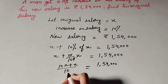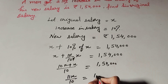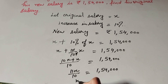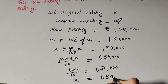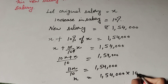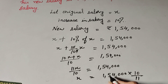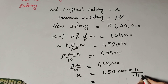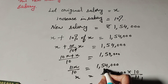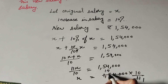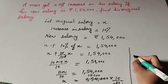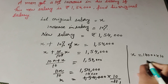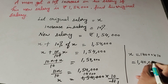So 10x plus x equals 11x over 10, which equals 1 lakh 54 thousand. Therefore x equals 1 lakh 54 thousand multiplied by 10 over 11. Since 1 lakh 54 thousand is divisible by 11 — 11 times 14 thousand equals 1 lakh 54 thousand — so x equals 14 thousand multiplied by 10, which gives x equals 1 lakh 40 thousand.